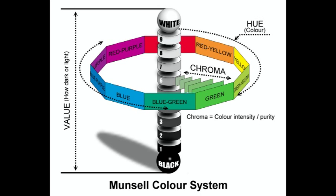As a color is mixed with black or white — as you can see from the green bars moving in towards the center pole — the color weakens, or in other words becomes more gray. To recap the chroma component: the stronger the color, the more steps it can move away from the center pole before reaching the pure color, with a maximum of 10 steps away from the center pole.